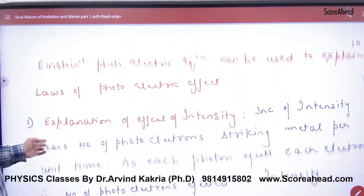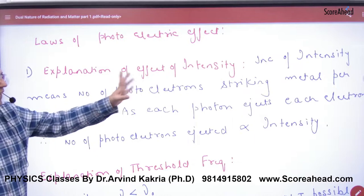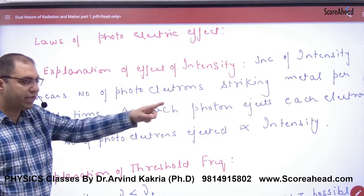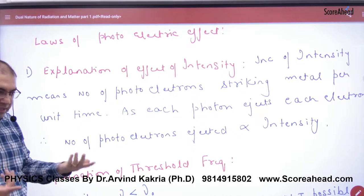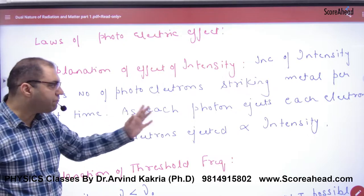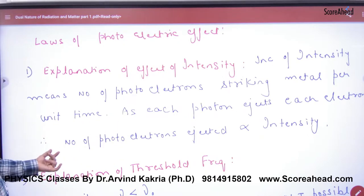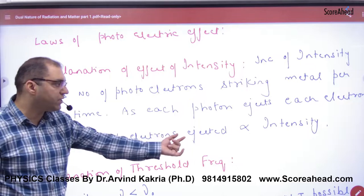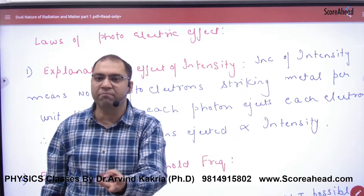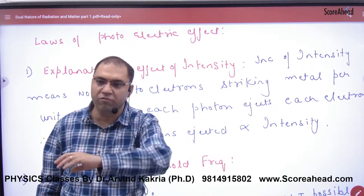The first law explains intensity. An increase in intensity means the number of photoelectrons striking the metal plate per unit time increases. Since each photon ejects each electron, the number of photoelectrons ejected is proportional to intensity.